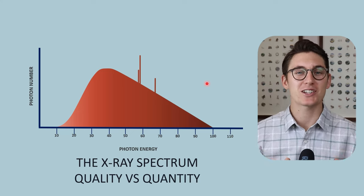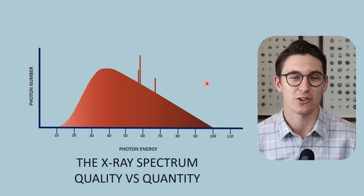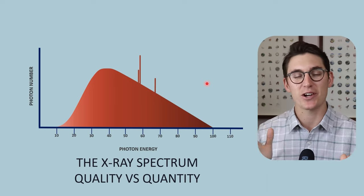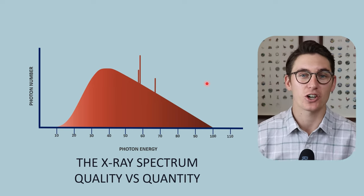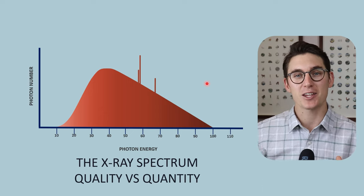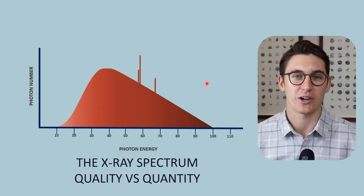In our previous two talks, we've looked at X-ray production at the anode. We've seen that when we accelerate electrons towards the anode and those electrons collide with our target material, they either produce heat or X-ray radiation.